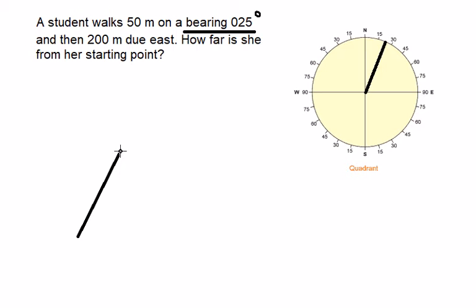We draw the location of 50 meters at bearing 25 degrees. Then 200 meters to the east, so we go to the east, that means we go straight line in here. Now we just create the triangle.